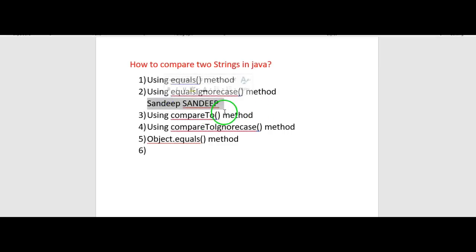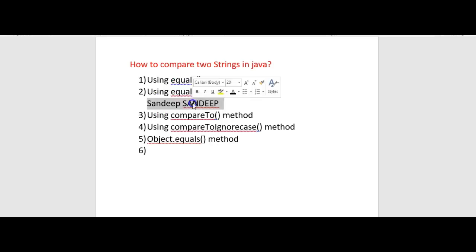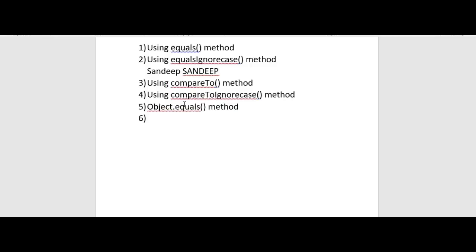If we use the equals method for those two strings, it will return false. Why? Because in the equals method, even the case must be the same. The third method is the compareTo method.